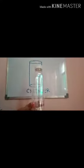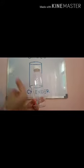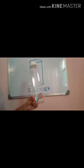Now, what we have learned? We have learned that a cylinder has two edges, three faces, and no vertices.